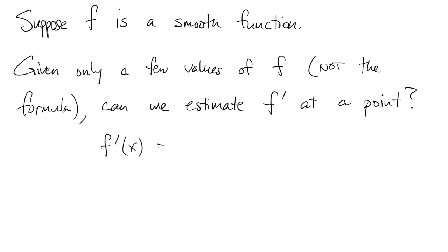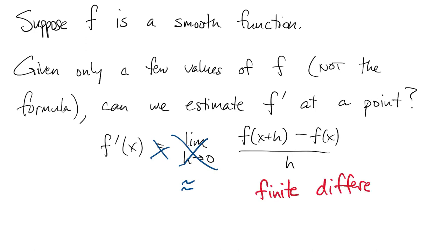We can start with the definition of f prime. When we know a formula for f, we have all kinds of tricks that avoid actually taking this limit. But if we just ignore the limiting part, we do get an approximation based on just two values of f. We call this a finite difference formula.